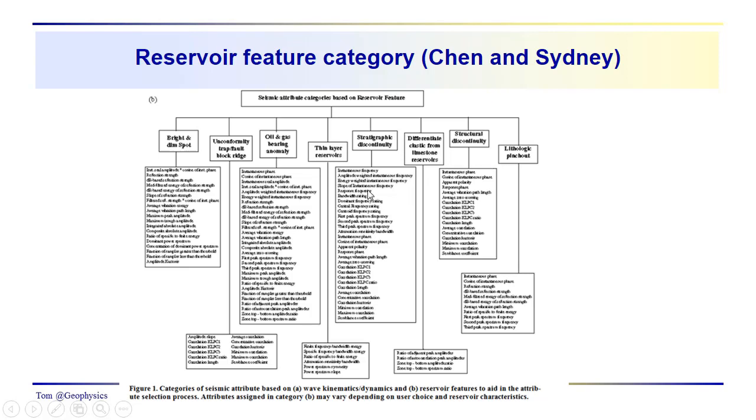Thin layer reservoirs - we get into spectral decomposition there. Differentiating clastic from limestone reservoirs, structural discontinuity, lithologic features. You can see just a great number of attributes, and it's almost endless. I think there are over 200 in this paper that have been listed, and these aren't ones you would see day to day, but a lot of people spend their careers looking at attributes, tweaking them, and developing new ones.